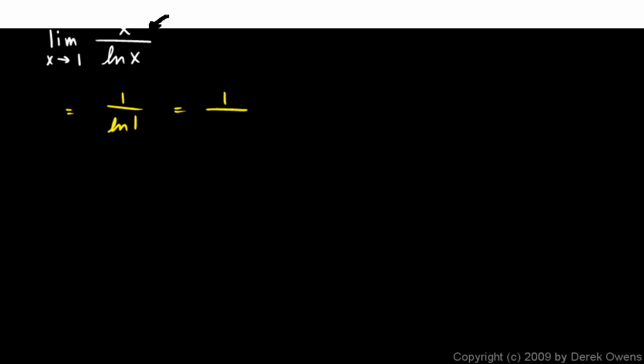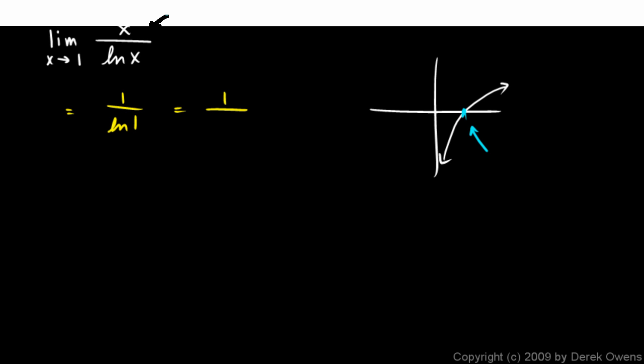The natural log of 1, remember your natural log function looks like this, roughly. And it crosses the axis right here at the point 1, 0. So the x coordinate there is 1 and the y value is 0. So natural log of 1 is 0. So we have 1 over 0. The limit does not exist.